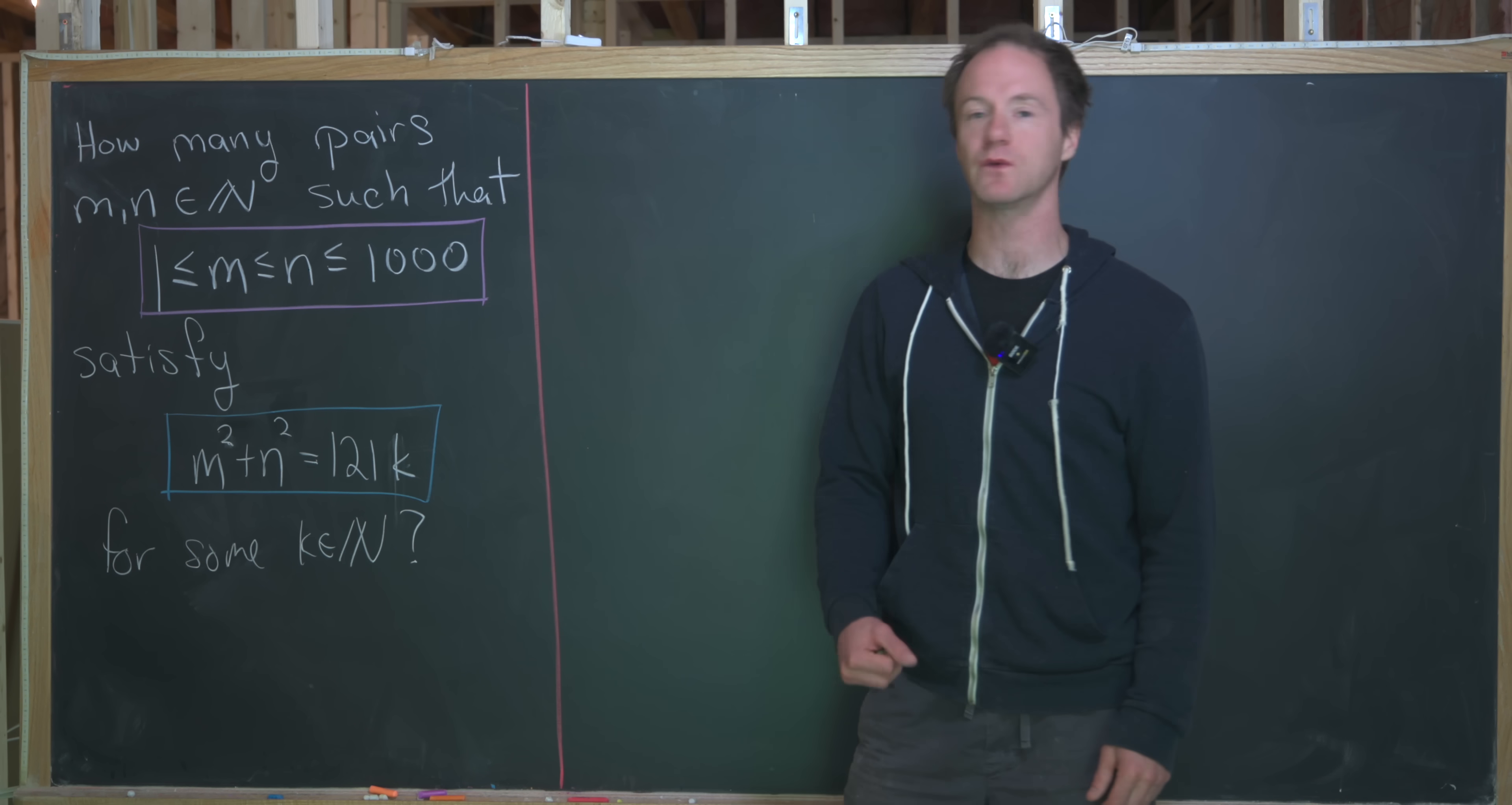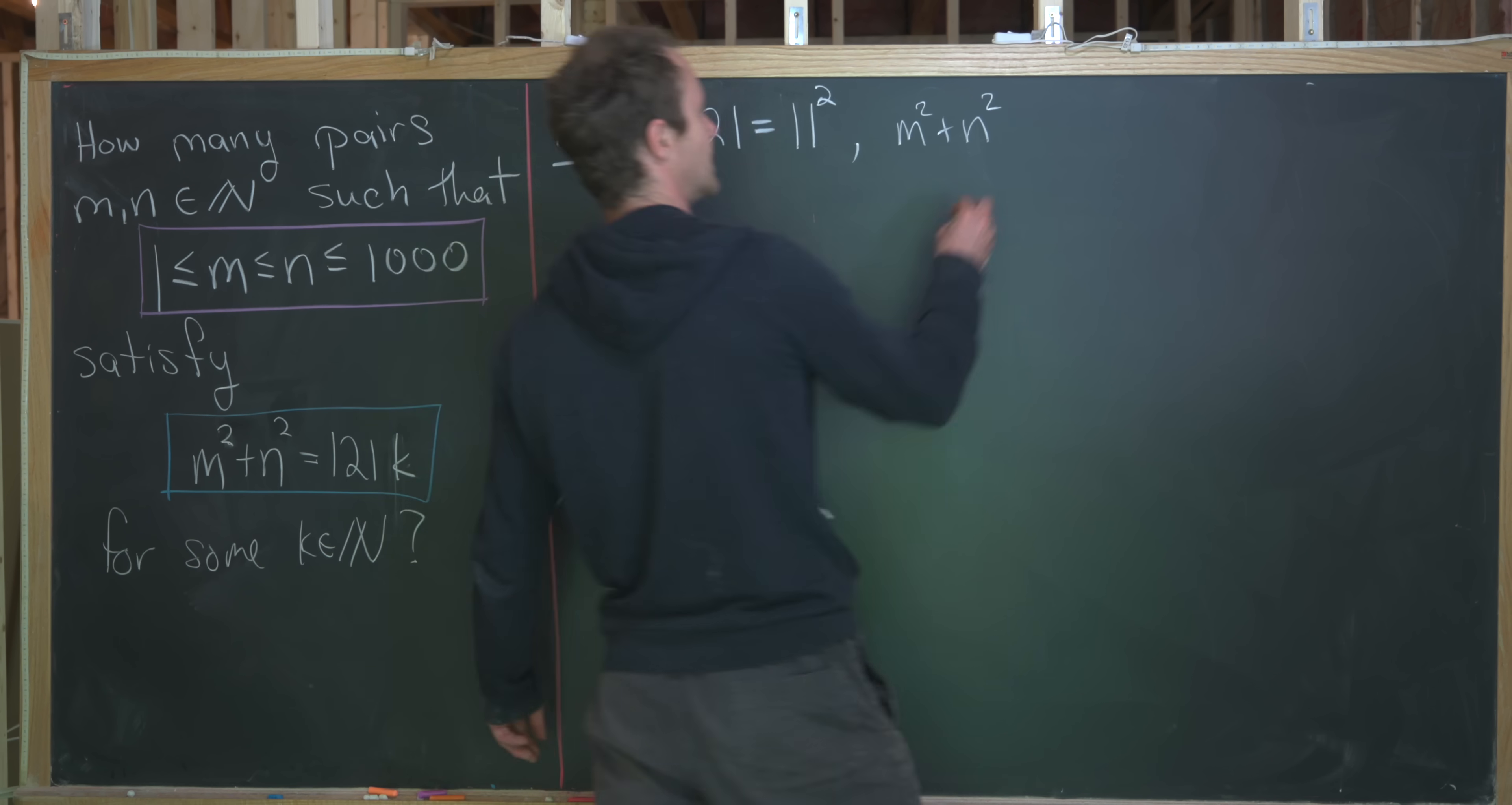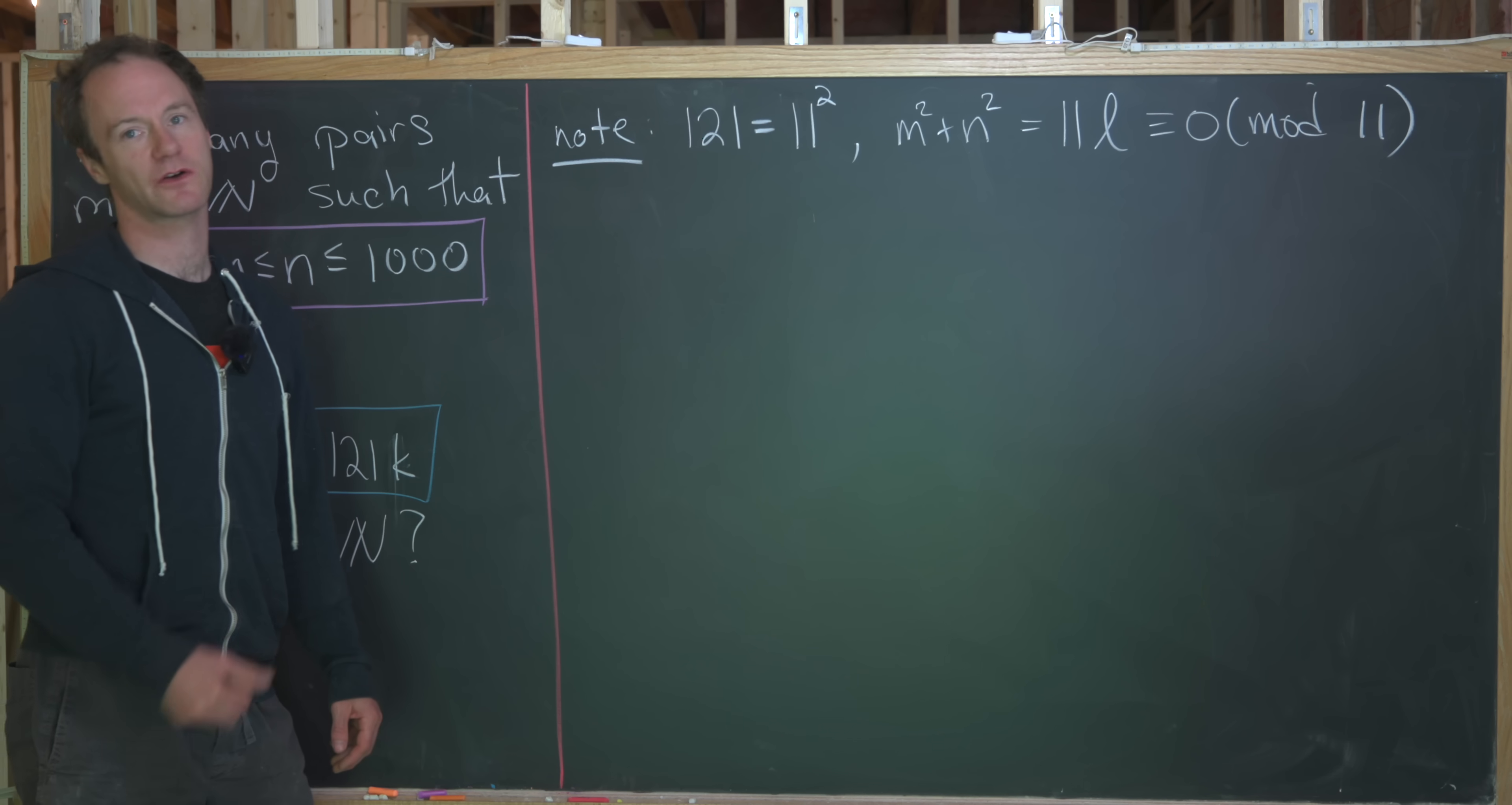And the second condition is that m squared plus n squared is a multiple of 121. So in other words, it's equal to 121 times k, where k is some other natural number. So maybe the first thing that we should probably notice is that 121 is a prime squared. It's actually 11 squared. But then that helps us quite a bit because now we can see that m squared plus n squared is not just a multiple of 121, but it's a multiple of 11. So we can write this as 11 times a new natural number, maybe we'll call that l. But then being equal to a multiple of 11 is the same thing as being congruent to zero modulo 11. And using the notion of congruence modulo 11 is going to actually help us make some calculations pretty nicely.